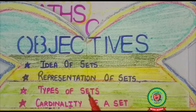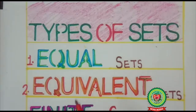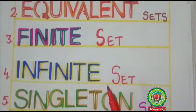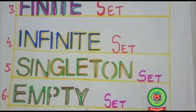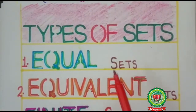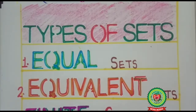Today we will do types of sets. The types of sets are: equal sets, equivalent sets, finite set, infinite set, singleton set, and empty set. Today we will discuss equal sets and equivalent sets on the basis of the definition of cardinality.